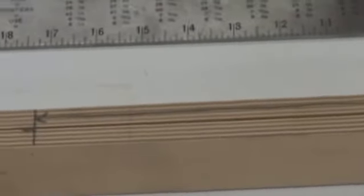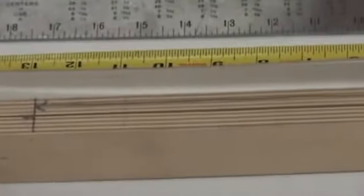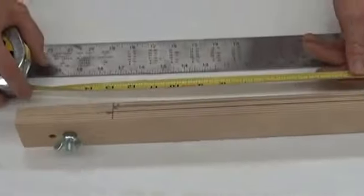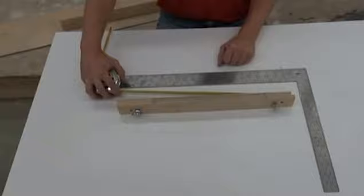In this example, our unit rise was 7 and 9 sixteenths, our unit run was 10 inches, and our pitch length was 12 and 9 sixteenths.